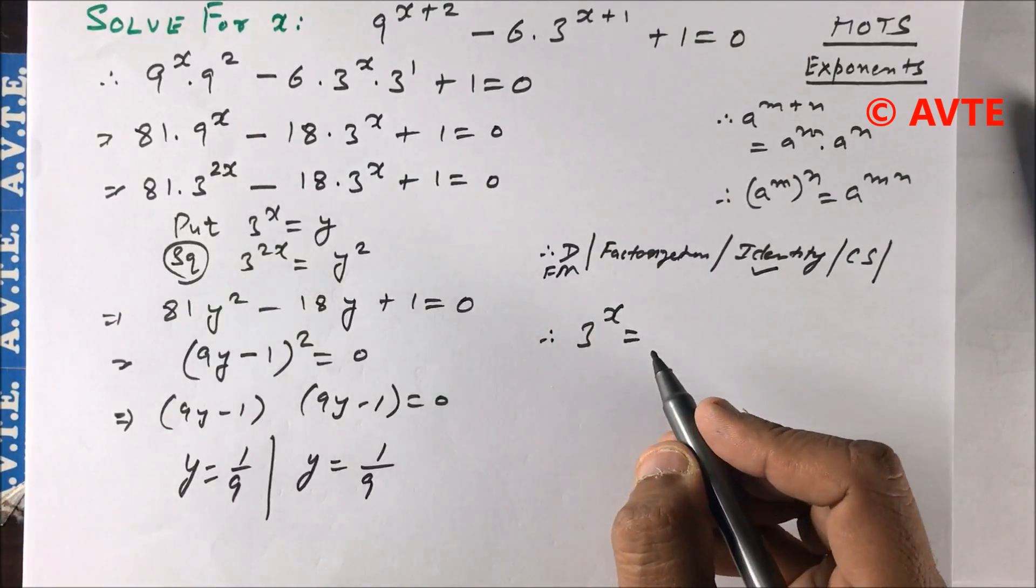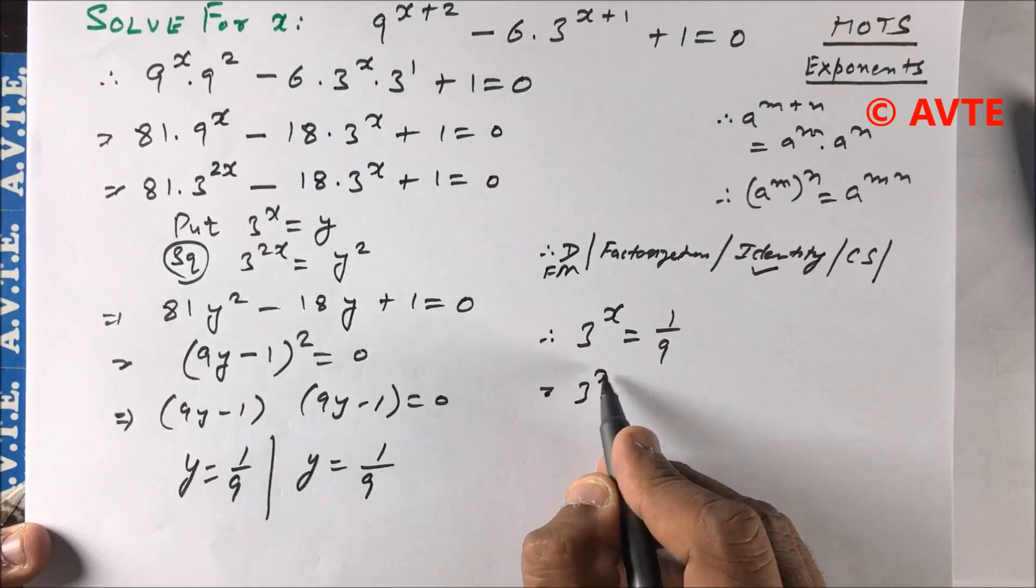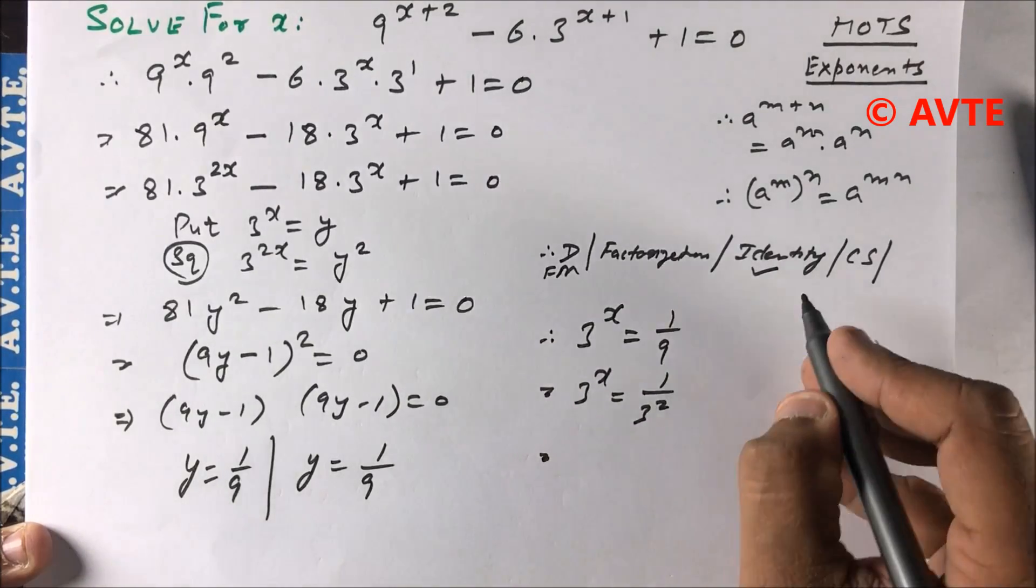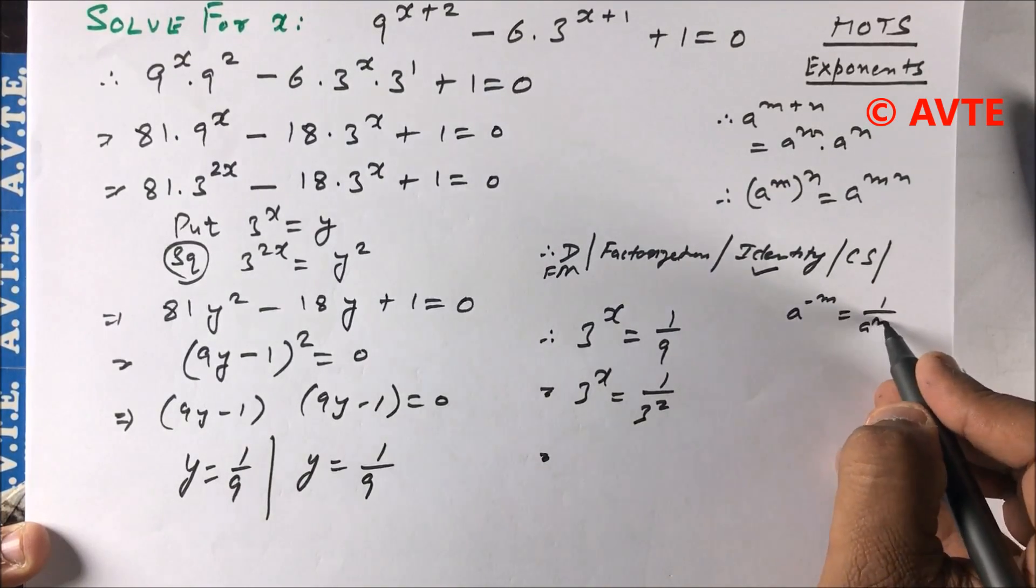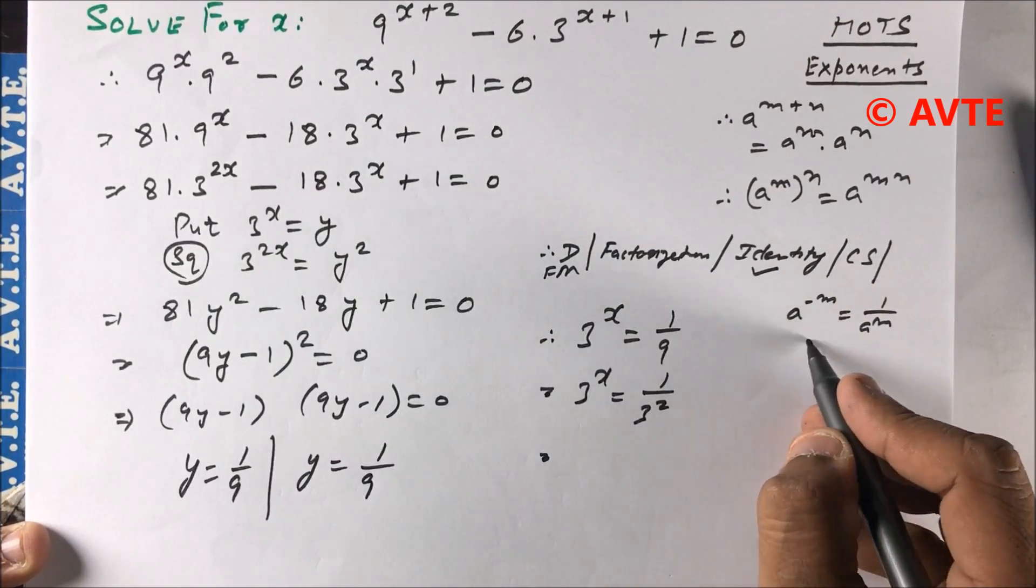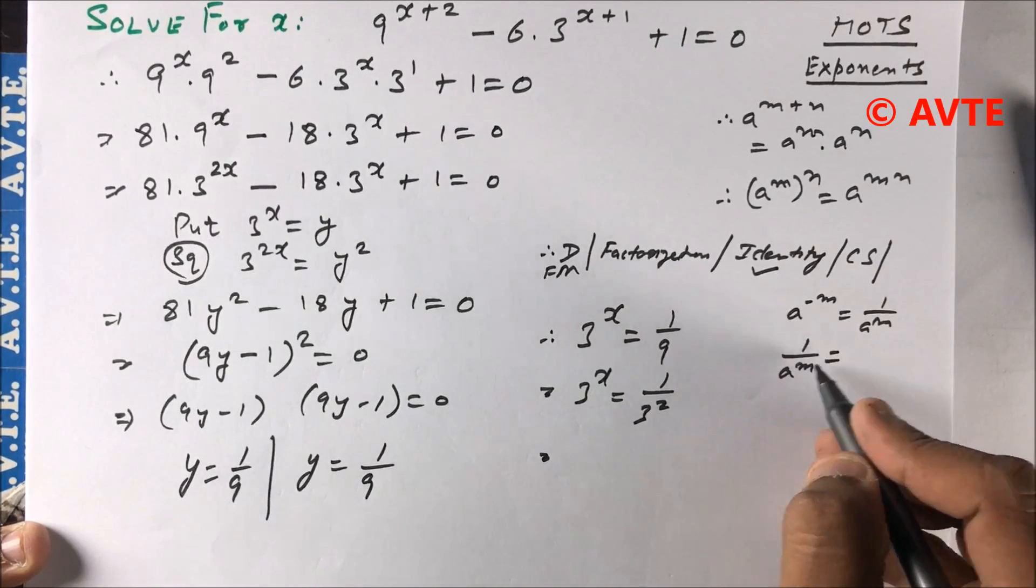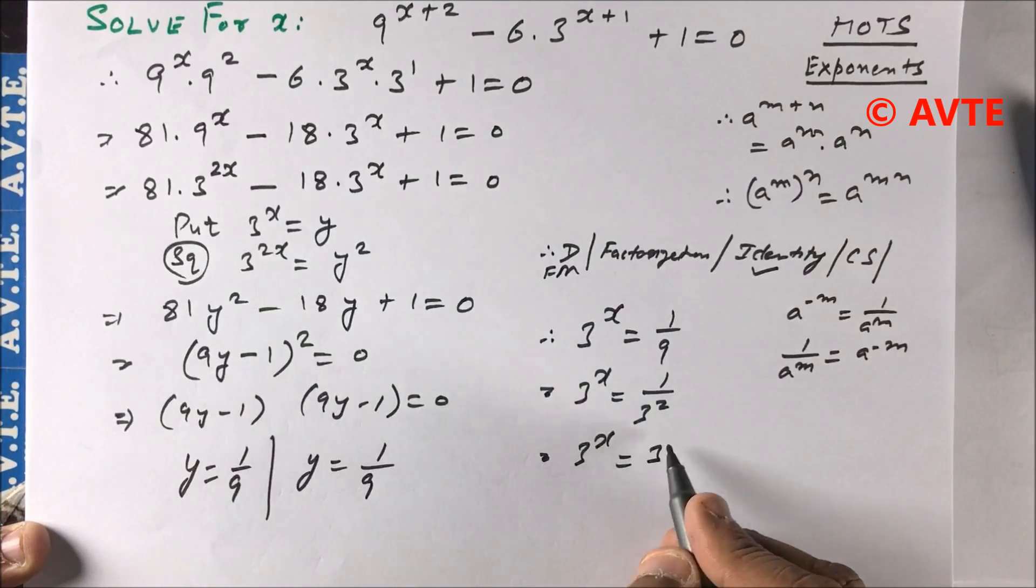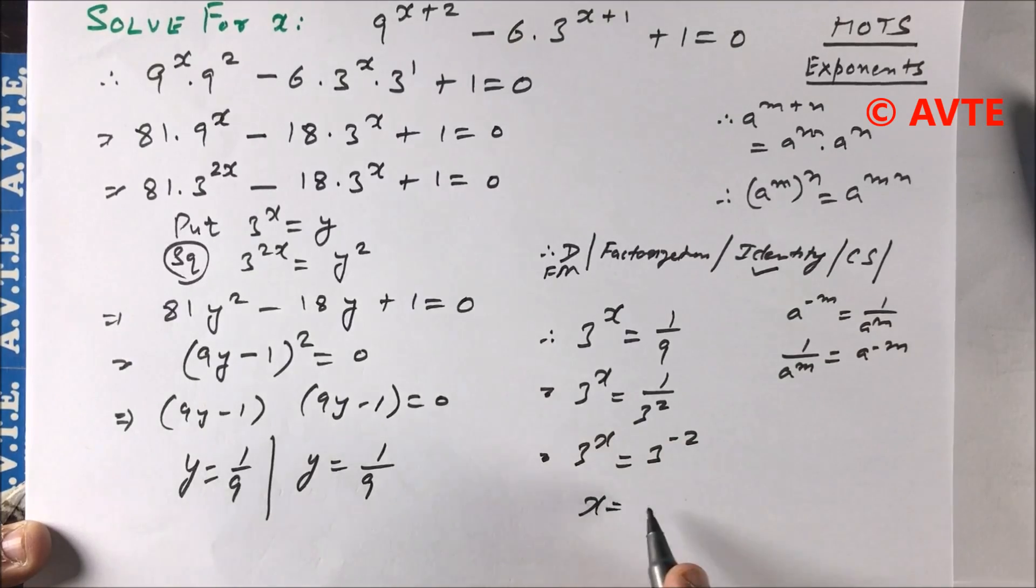3^x = 1/9. It can be written as 3^x = 1/3². We apply the law a^(-m) = 1/a^m, so the reverse is 1/a^m = a^(-m). Therefore 3^x = 3^(-2). When the bases are same, they are cancelled. The value of x is -2.